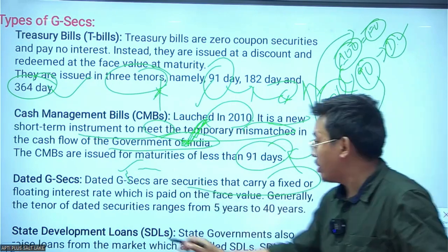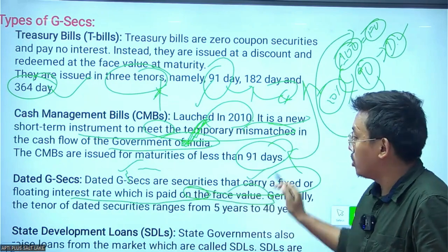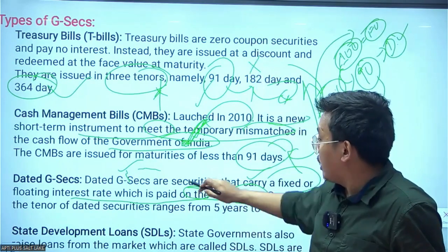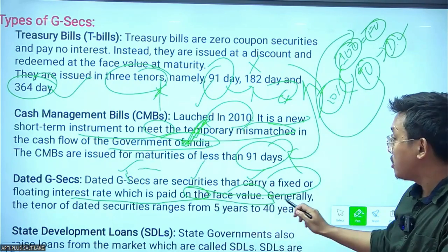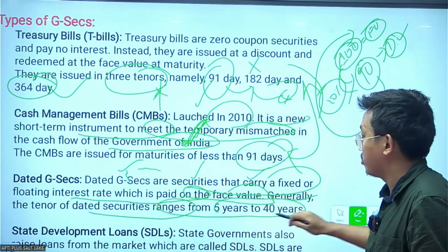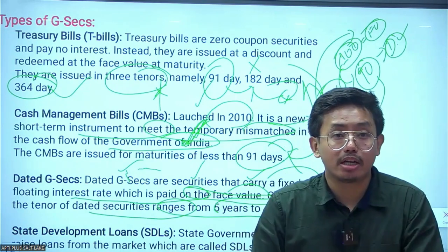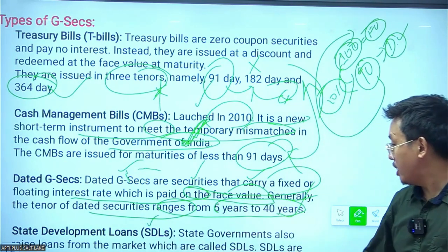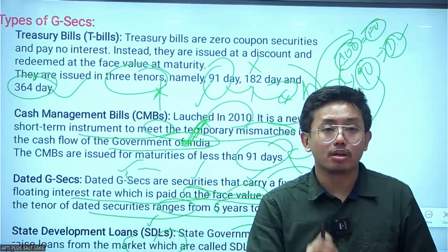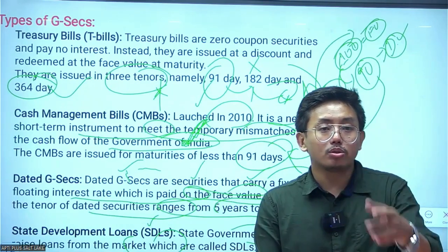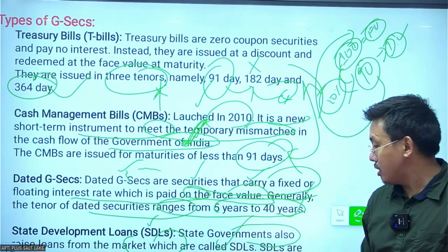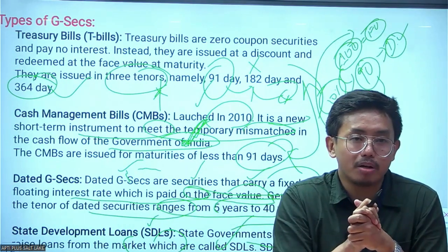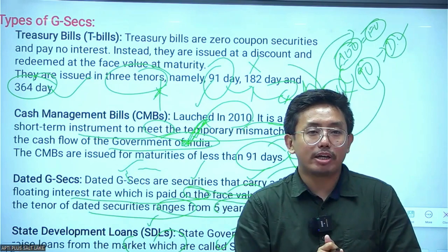Dated Securities are G-Secs that carry a fixed or floating interest rate paid on the face value, unlike T-bills which are issued at a discount with no interest. The tenor of dated securities generally ranges from 5 to 40 years. State Development Loans are loans issued by state governments from the market and form the fourth type of government securities in India.